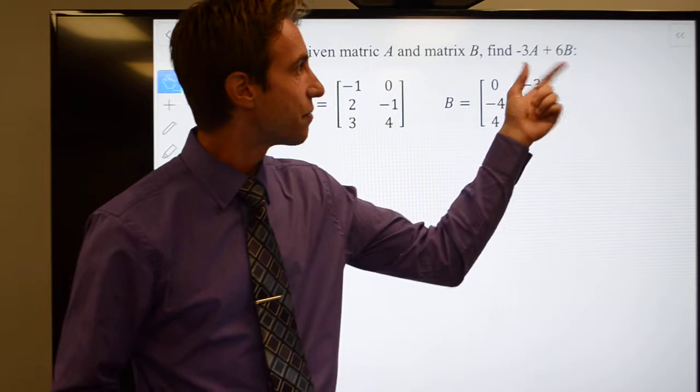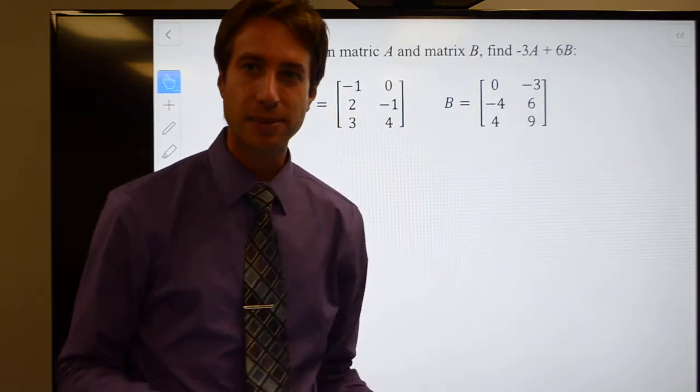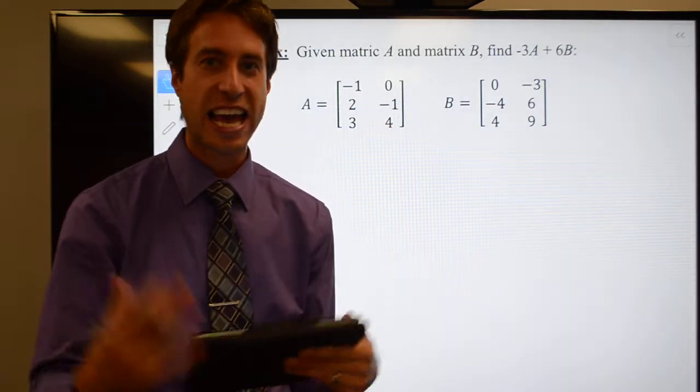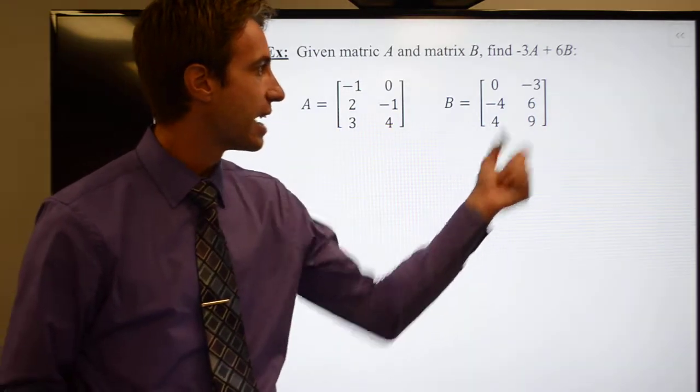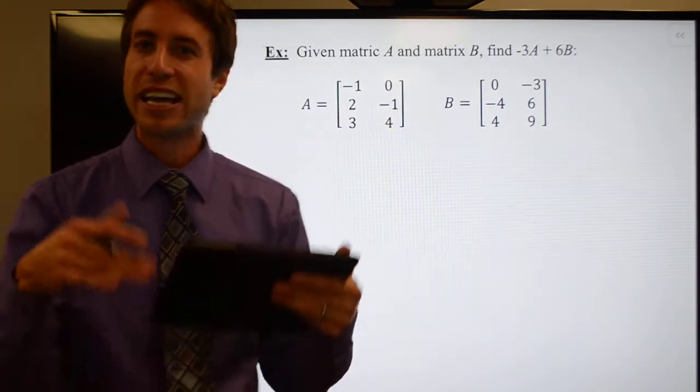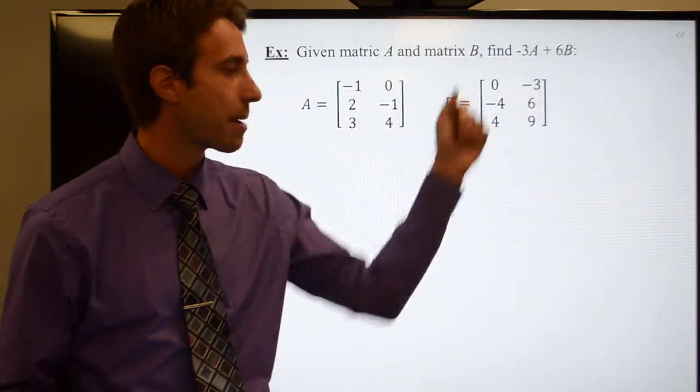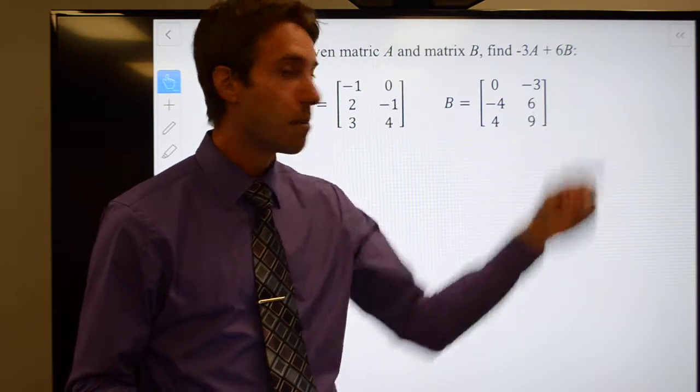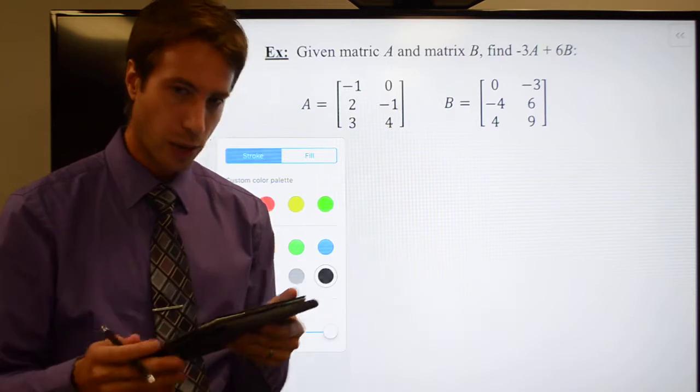We're going to take a look at this one. They want me to find -3 times matrix A plus 6 times matrix B. So I'm going to be doing both scalar multiplication and addition in the same problem. They gave me matrix A and matrix B. Here's what I would do. I'm going to multiply matrix A by -3, multiply matrix B by 6. Let's do both of those first.